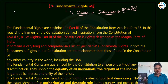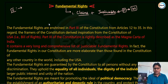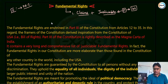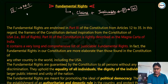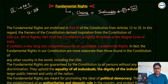The fundamental rights are mentioned in Part Three of the constitution. Part Three of the constitution is referred to as the Magna Carta of India, because in Part Three the fundamental rights have been described in a very detailed and comprehensive manner. The articles covered are Article 12 to Article 35 — these are the fundamental rights.